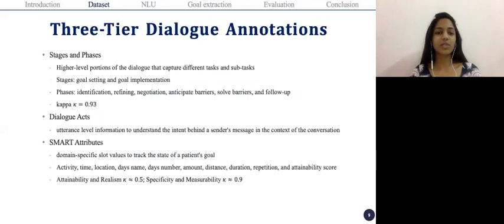After looking at the conversations, we found there was this hierarchical structure to these conversations, which we classify as stages and phases, dialogue acts, and SMART attributes. So stages and phases highlights the different tasks and subtasks in these conversations related to the goal setting and goal implementation. So there are two stages, goal setting and goal implementation. And then there are six phases, and these phases can belong to either of the stages and consist of these six: identification, refining, negotiation, anticipate barriers, solve barriers, and follow-up.